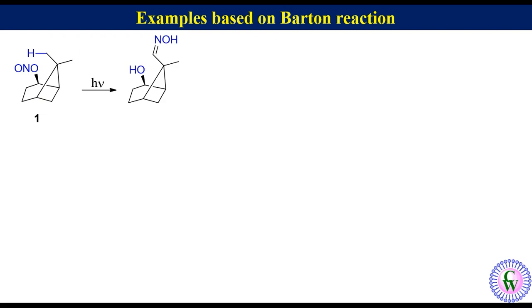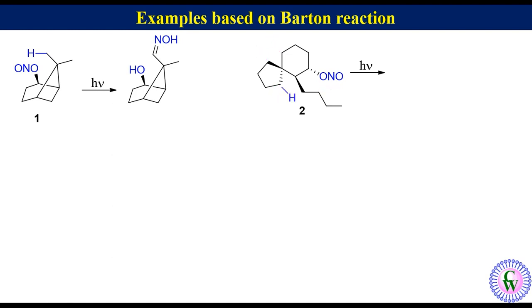Example 2. In this molecule, there are four delta carbons with hydrogen. Only this delta hydrogen which is close in space to the nitrite group will be abstracted. Therefore, we will get this oxime as the product.